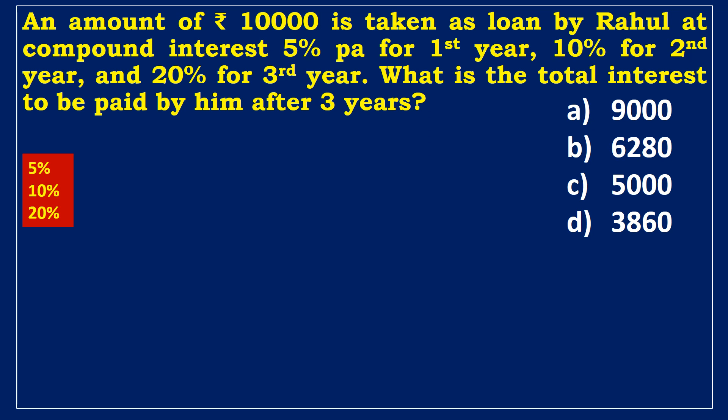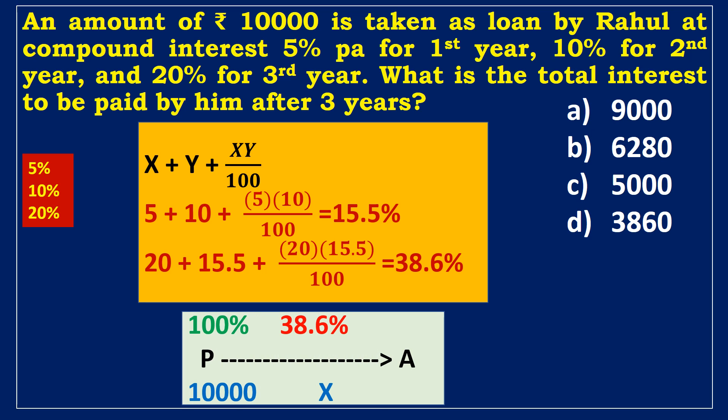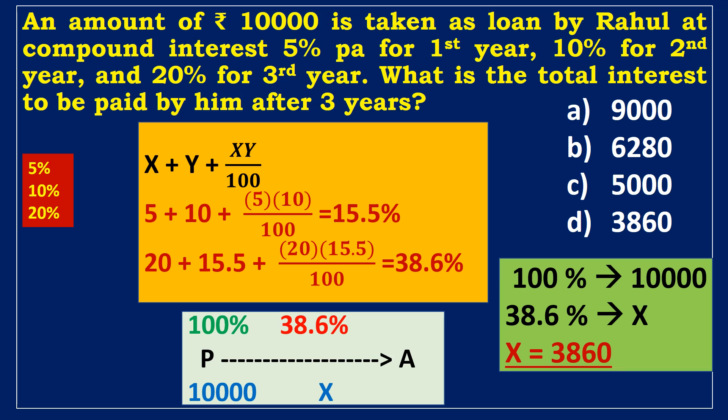An amount of 10,000 rupees is taken as a loan at compound interest of 5% for the first year, 10% for the second year, and 20% for the third year. What is the total interest after three years? Using effective percentage: 5 + 10 + (5×10)/100 = 15.5% for two years. For three years: 15.5 + 20 + (15.5×20)/100 = 38.6%. Assuming principal is 100%, CI = 38.6%. If 100% = 10,000, then 38.6% = x. Cross-multiplying gives CI = 3860 rupees.